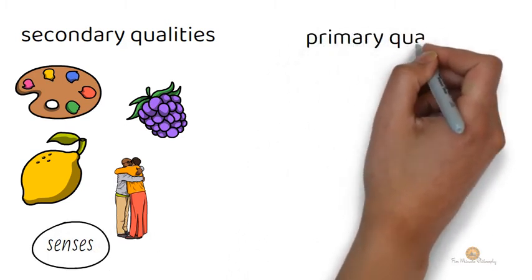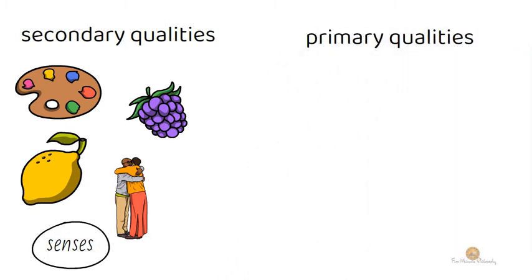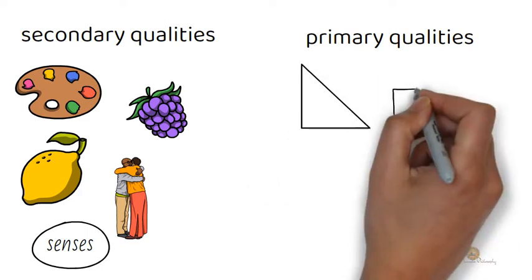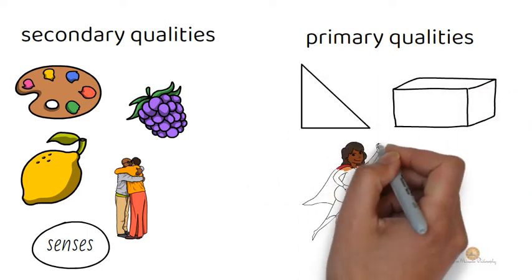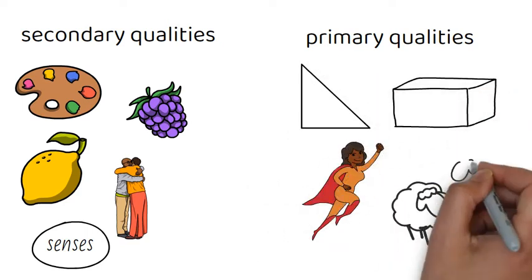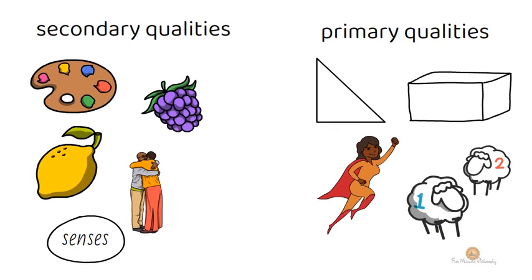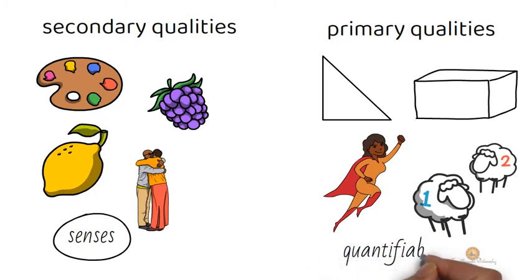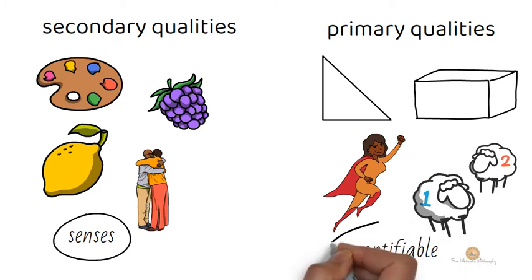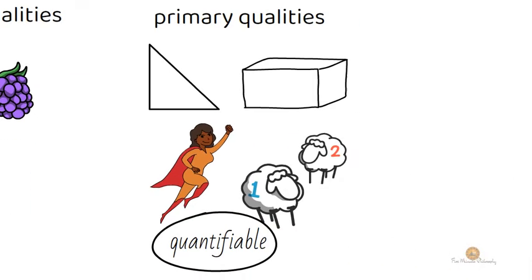Now on the other hand, you have primary qualities. Primary qualities are things like an object's shape, or its extendedness in space, its motion, and its number. Things that are quantifiable. They're the things that you can't imagine the object not having, while the object still remaining what it is.